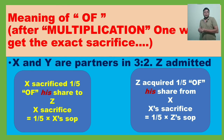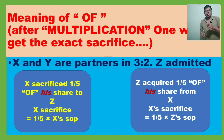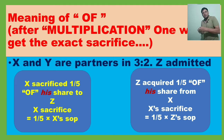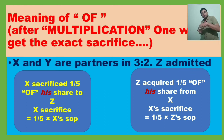So here, meaning of 'of': after multiplication one will get the exact sacrifice. X and Y are partners in 3:2. Z is admitted. X sacrifices one-fifth of his share to Z — that means X's sacrifice is one-fifth into X's share of profit. That is the sacrifice. Now we got the sacrifice; to get the new share of profit of X, we have to deduct that. Similarly, Z acquired one-fifth of his share from X — so you multiply one-fifth into Z's share of profit to get the sacrifice X has made, then deduct from X's share to get the new share of profit.